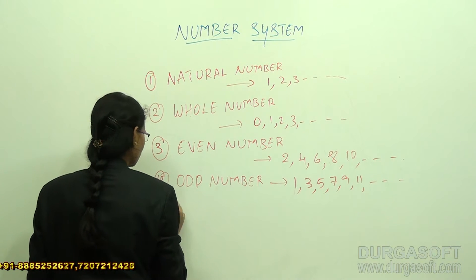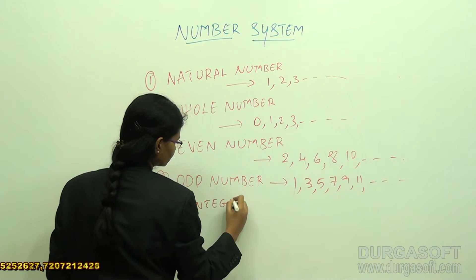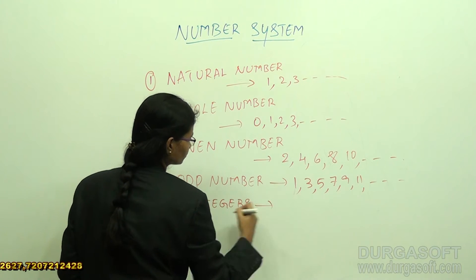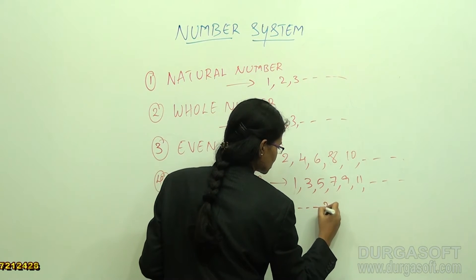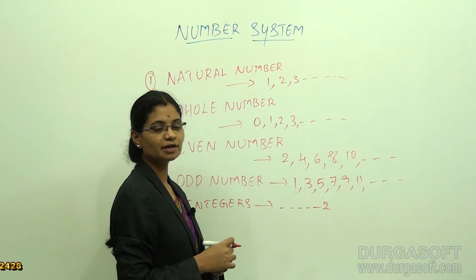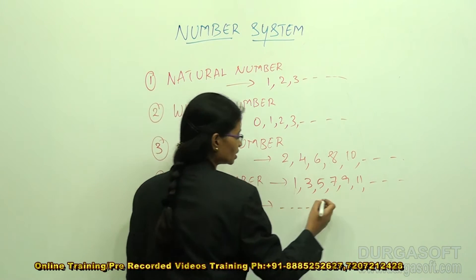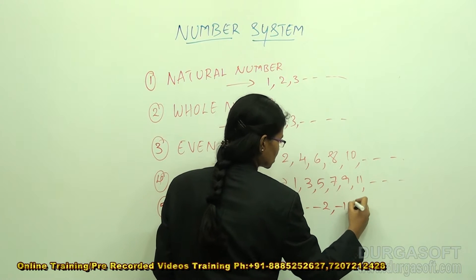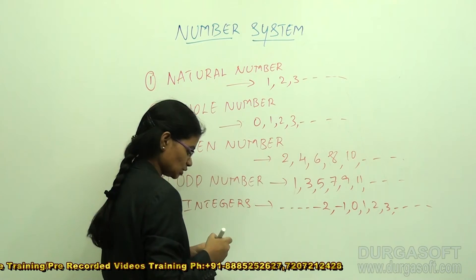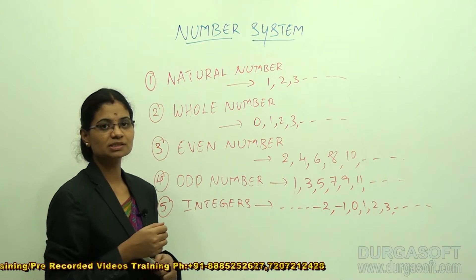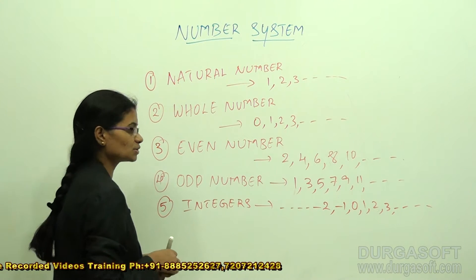Next, let's see what integers are. Integers include all negative numbers, plus 0, plus all positive numbers. So the combination of negative numbers, 0, and positive numbers — like …, -2, -1, 0, 1, 2, 3, and so on — gives us integers.